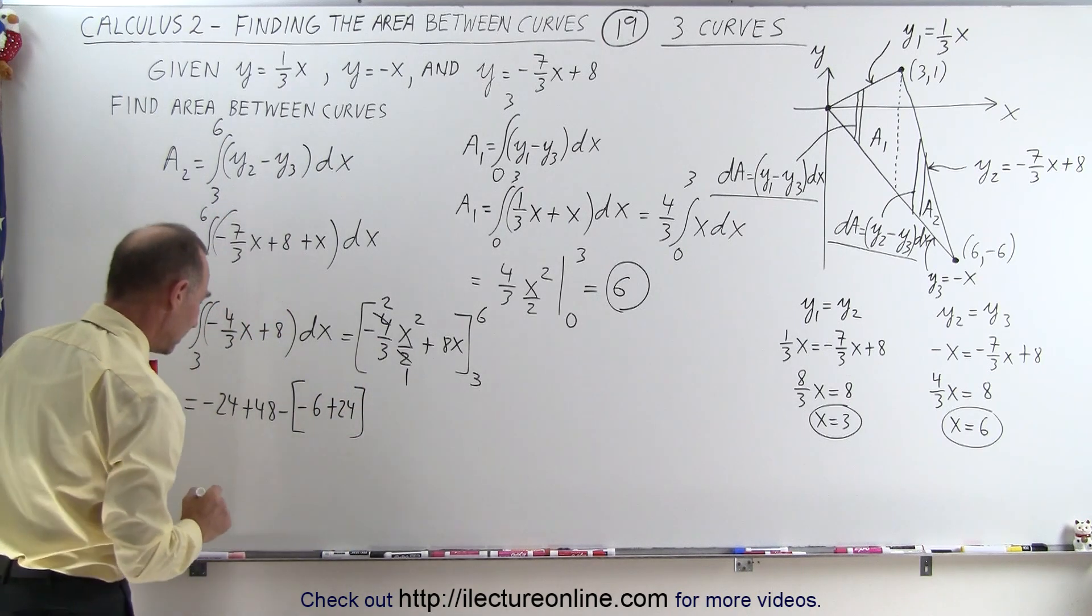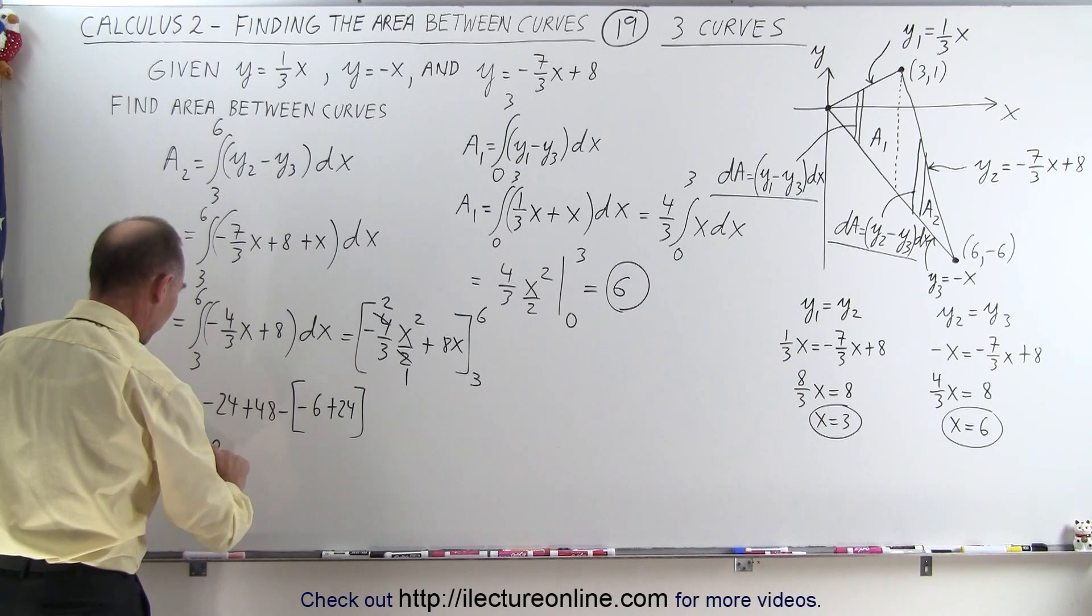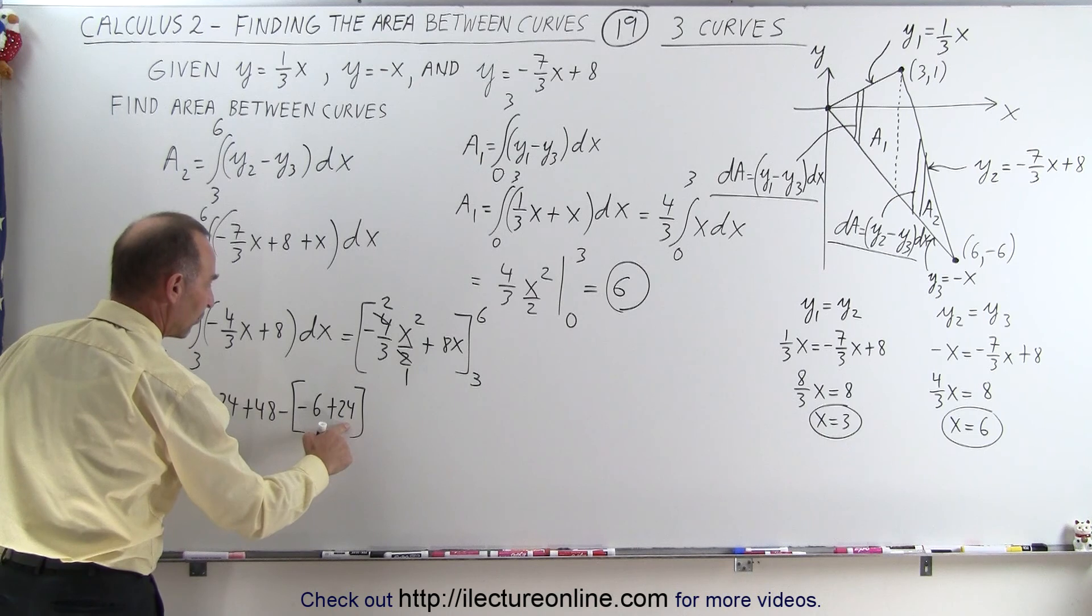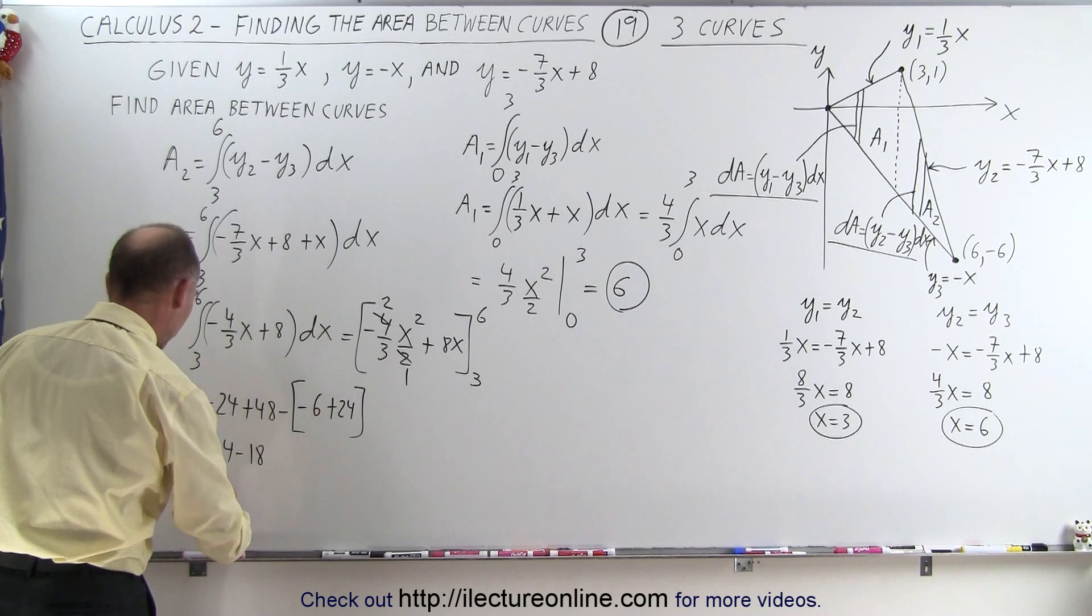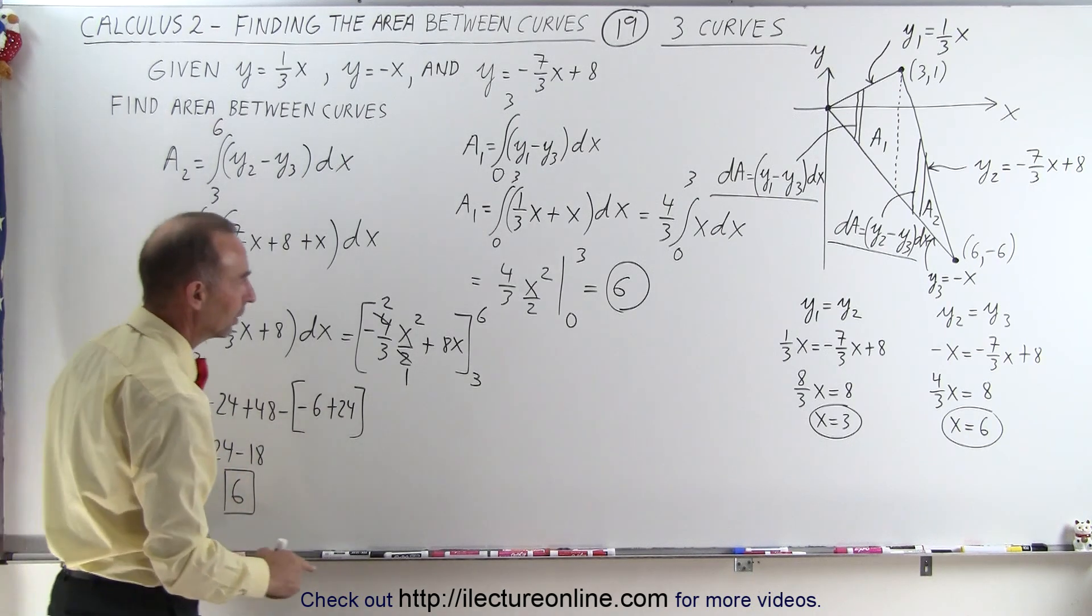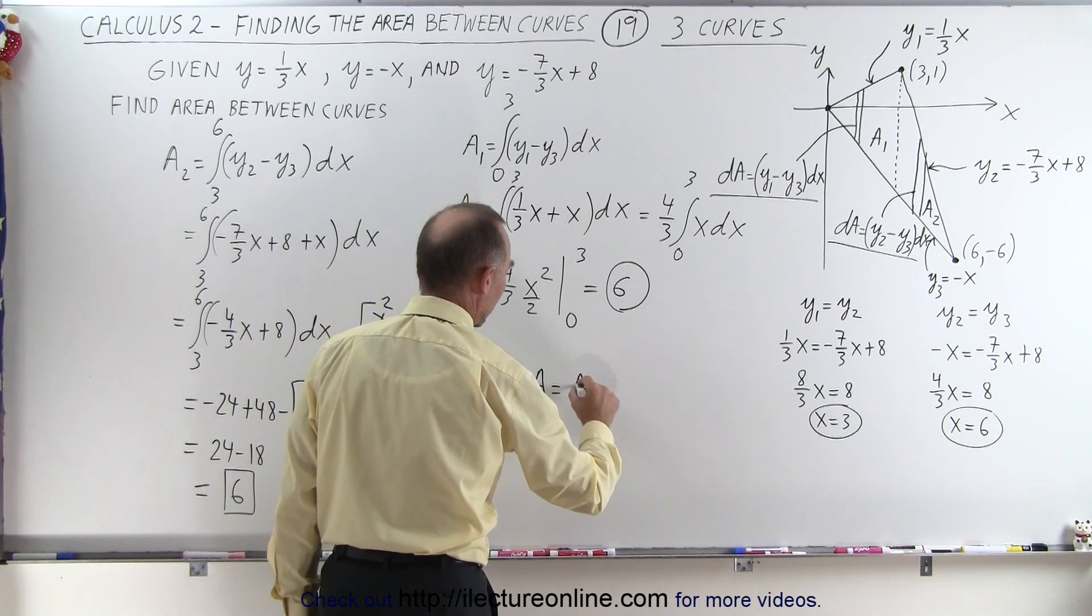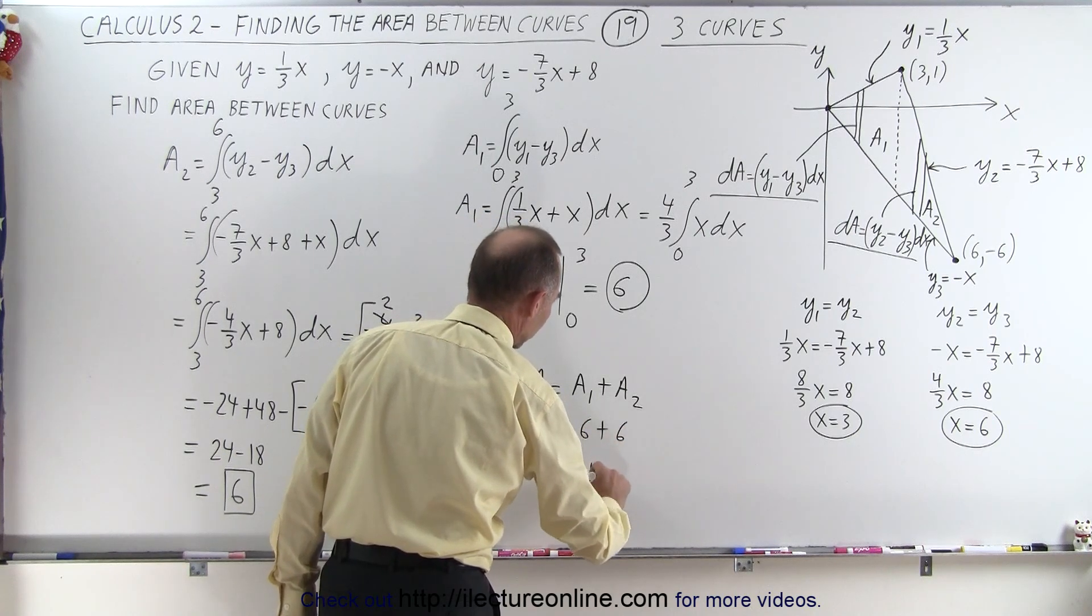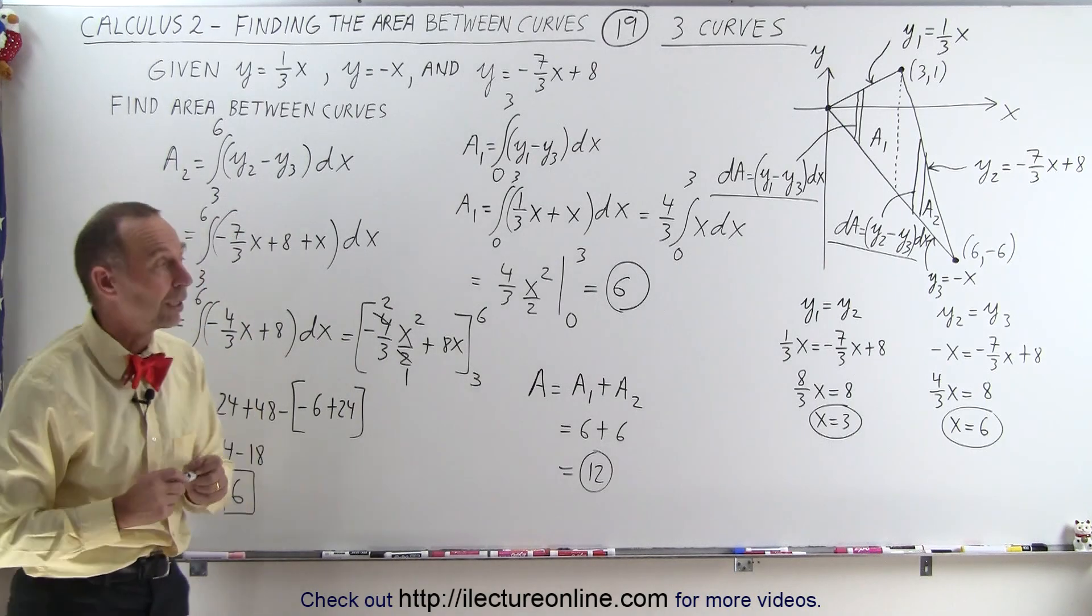And now we need to simplify. So first of all, -24 plus 48 is a positive 24. And here it's -6 plus 24 is a positive 18, minus a positive 18, that's -18. So this becomes 6 as well. So the total is simply equal to a1 plus a2. In this case, that was equal to 6 plus 6, which is equal to 12. And that's the total area bounded by those three lines.